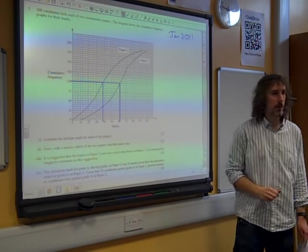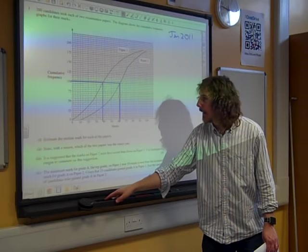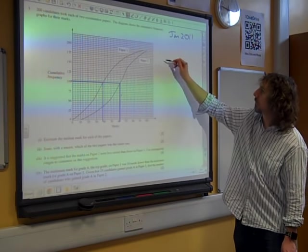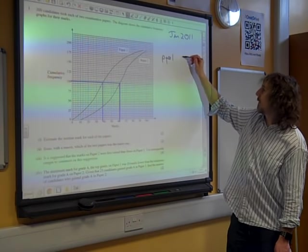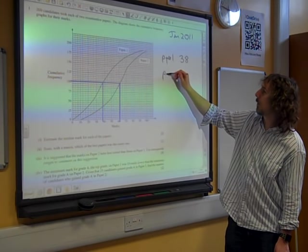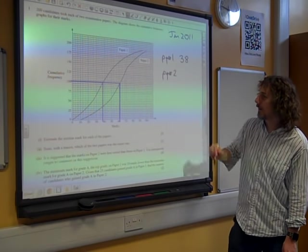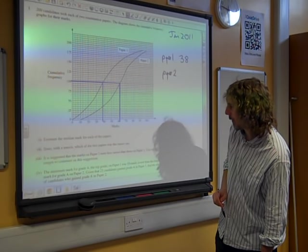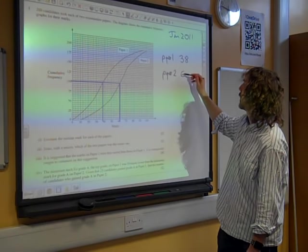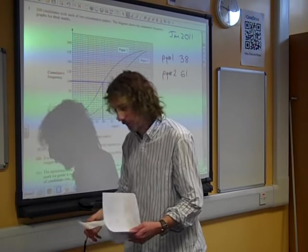Okay, and so, thinking about what we've got there, I reckon that for paper 1, well, that looks like that's 38. And for paper 2, the median looks to me like it is, what is that, 61? Yeah. Looks like 61. We'll go with that.